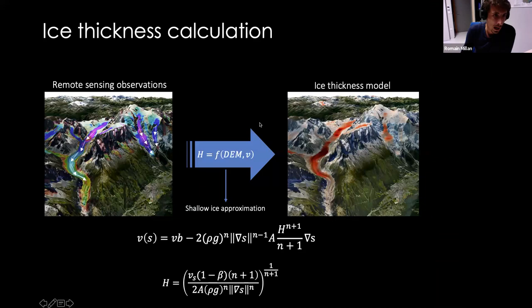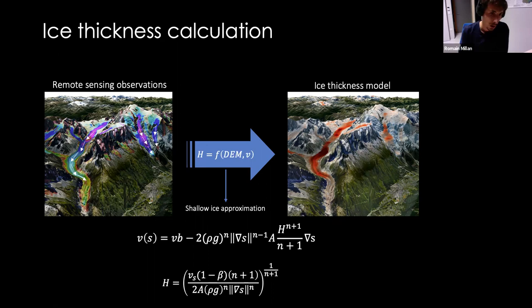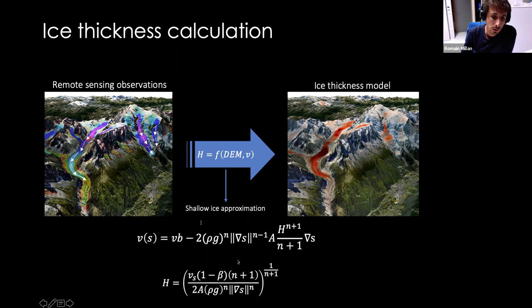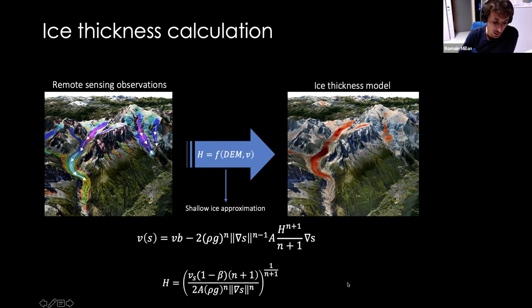Now moving to the ice thickness calculation part. The goal is to use this new ice velocity product to calculate the ice thickness distribution of all glaciers on Earth. We use a simple approach based on the shallow ice approximation, which connects the thickness H to the surface velocity and the surface slope, taking an exponent n equal to three, with A the creep parameter and the slope. Rather than a glacier-by-glacier approach as classically used in the consensus estimate, we invert the velocity regionally to directly obtain a regional ice thickness map.